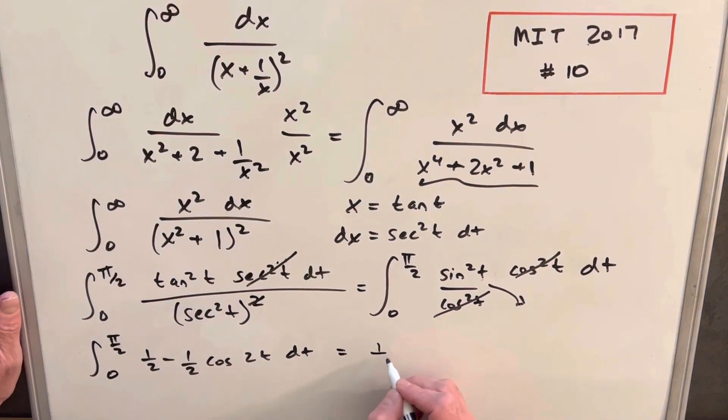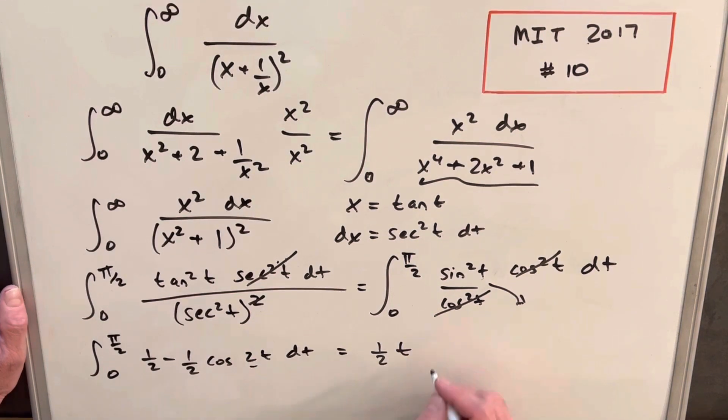So integrating half, we're going to get half t. Then we're going to have minus a half, but then divided by this 2 is going to be 1 over 4. Derivative of cosine is going to be sine 2t, evaluated from pi over 2 to 0.